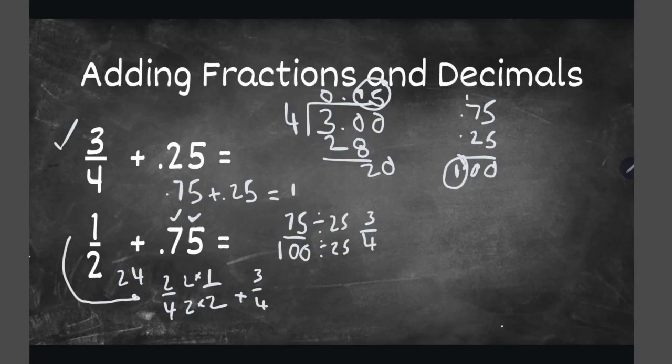The 1/2 became 2/4, so we can add it because we have common denominators. Now 2/4 plus 3/4. We add 2 plus 3 is 5, and keep the denominator 4, giving us 5/4. You can convert that to a mixed number: 5 divided by 4 is 1 with 1 left over, so 1 and 1/4.